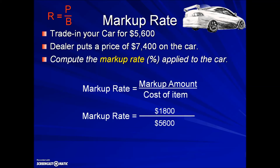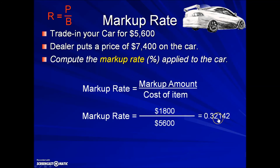Now we're ready to finish the calculation by taking the numerator divided by the denominator. This gives us a decimal, but our markup rate needs to be expressed as a percent. Moving the decimal two places to the right gives us a 32.1 percent markup rate.